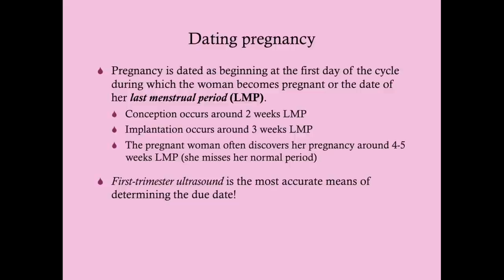The most common way to date pregnancy is based on her last menstrual period. You ask her when her last day of bleeding was and use that date as her LMP. Women often know this very well. Conception typically occurs around two weeks LMP, maybe a few days after, assuming 28-day cycles.